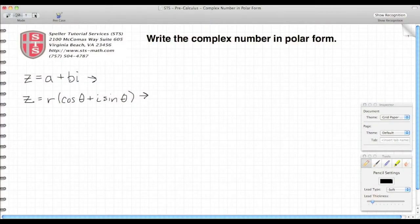Welcome back to Speller Tutorial Services. Today we're going to talk about writing a complex number in its polar form. Let's take a look at these two equations I have written out. This first equation is a complex number because it has a real part and an imaginary part, imaginary signified by the letter i.